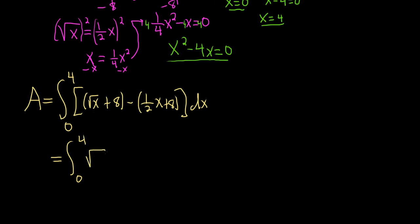So this is equal to the definite integral from 0 to 4. The square root of x will stay there. And 8 minus 8, when you distribute this minus sign, they're going to cancel. So you just get minus 1 half x dx.